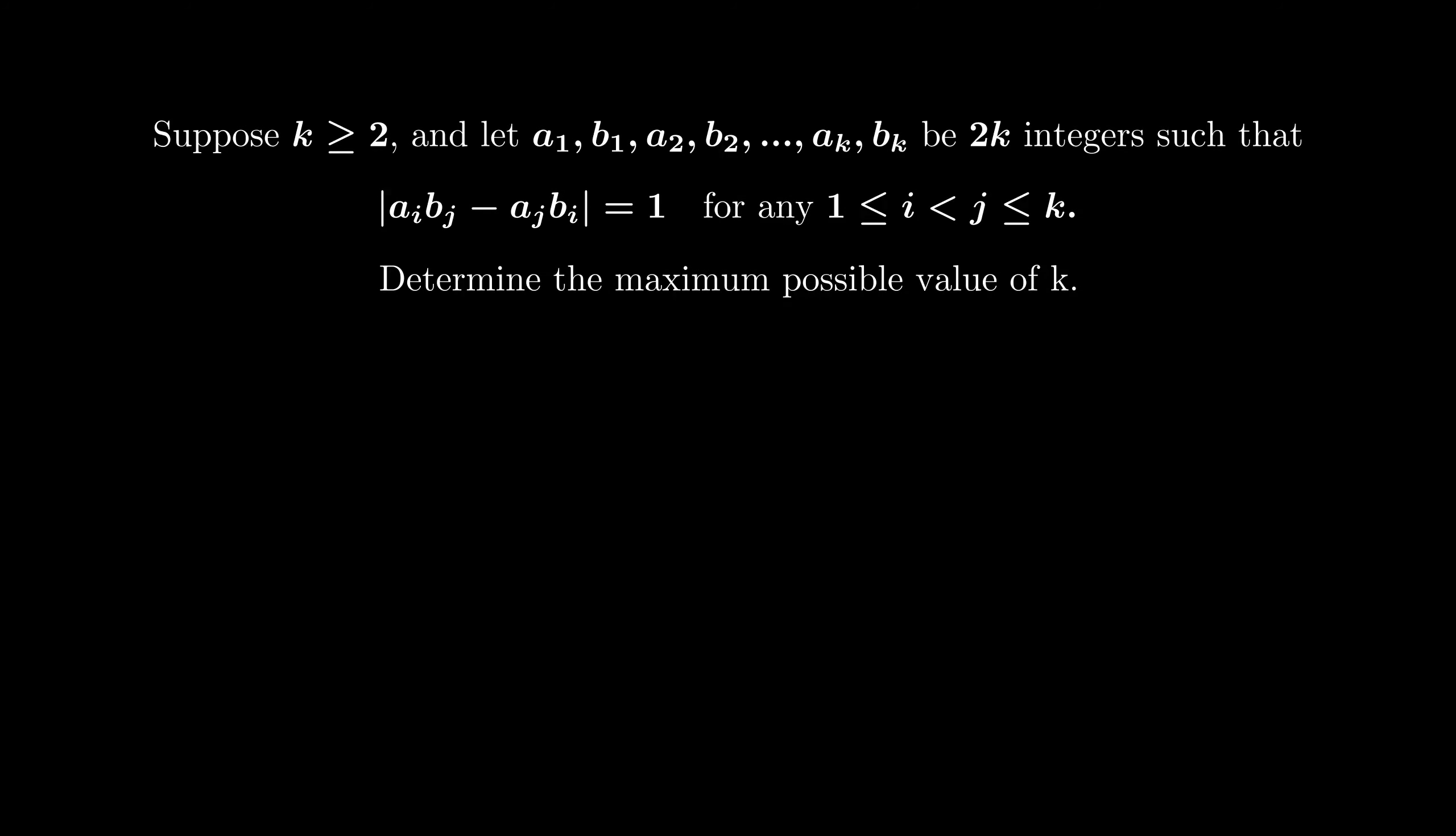We have k pairs of integers a1b1, a2b2, to akbk, such that the cross product between any different pairs has absolute value equals to 1. More explicitly, we have aibj minus ajbi equals to 1 in absolute value. The question is to determine the maximum possible value of k.